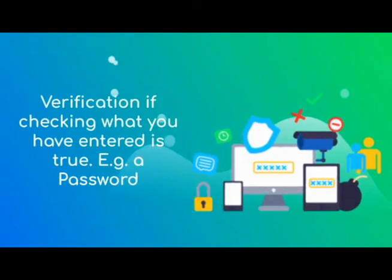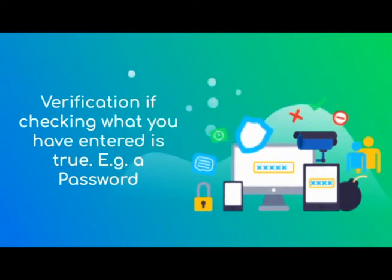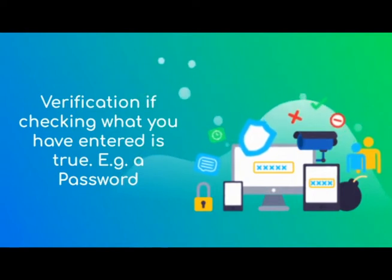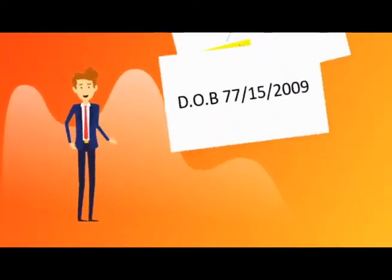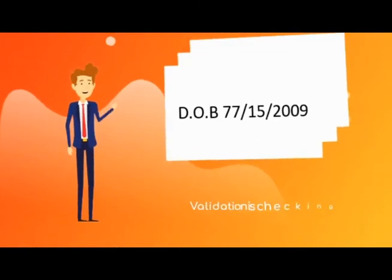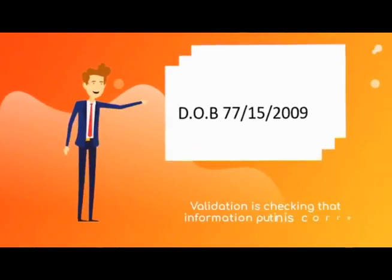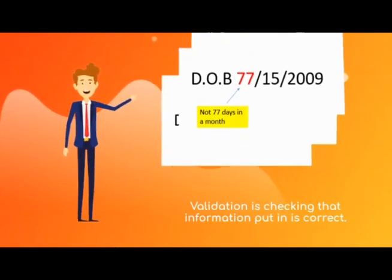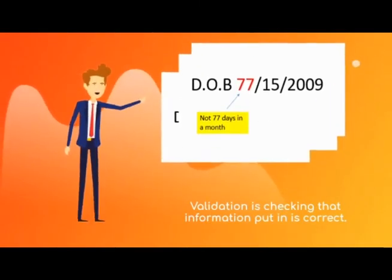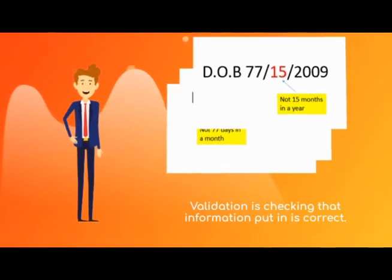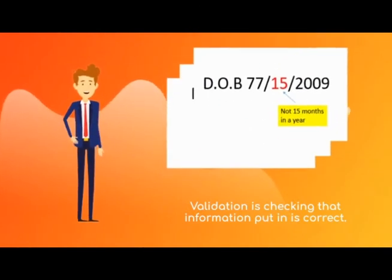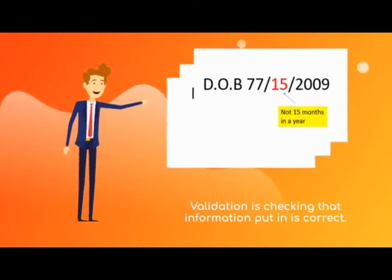Verification is checking that what you have entered is true — for example, a password. Validation is checking that the information you put in is correct, like the example shown here with incorrect dates of birth.